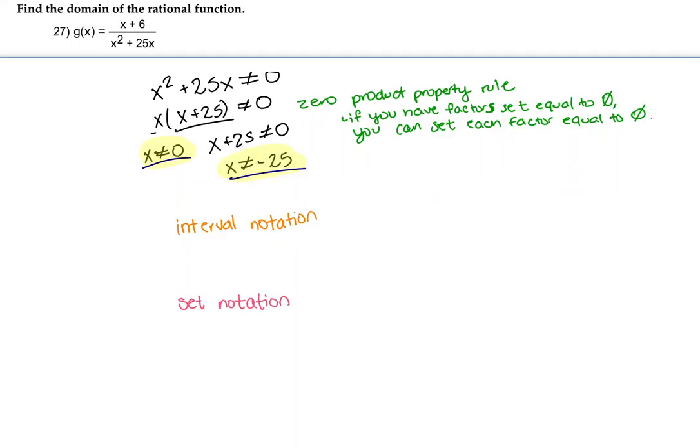With interval notation, we are going to write the intervals in which the x's exist. Starting from the left, or the smallest number, to the largest number, or the most positive number. So we're going to start with negative infinity, and then the smallest number that is an impossibility is negative 25, so we're going to stop there.